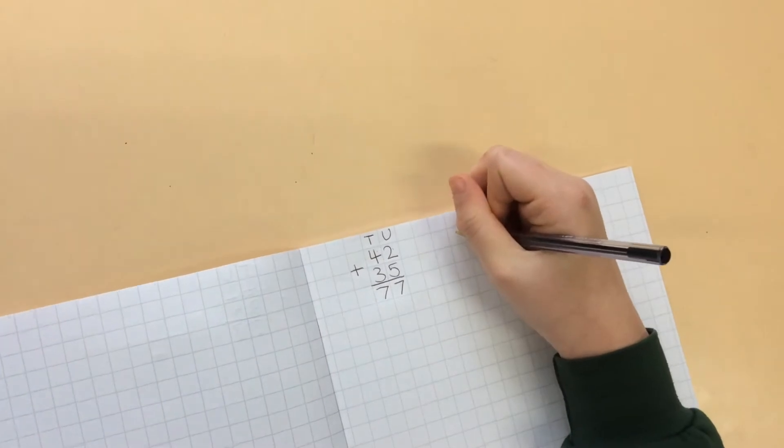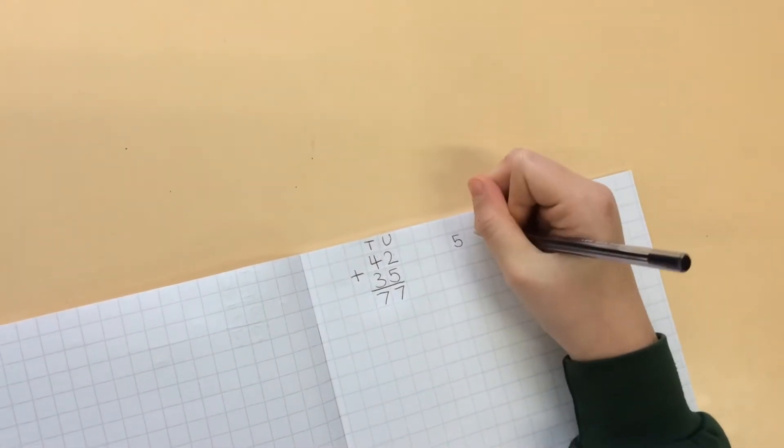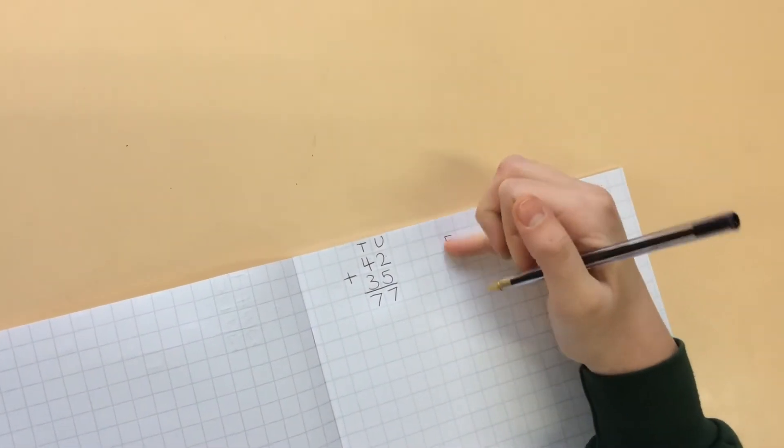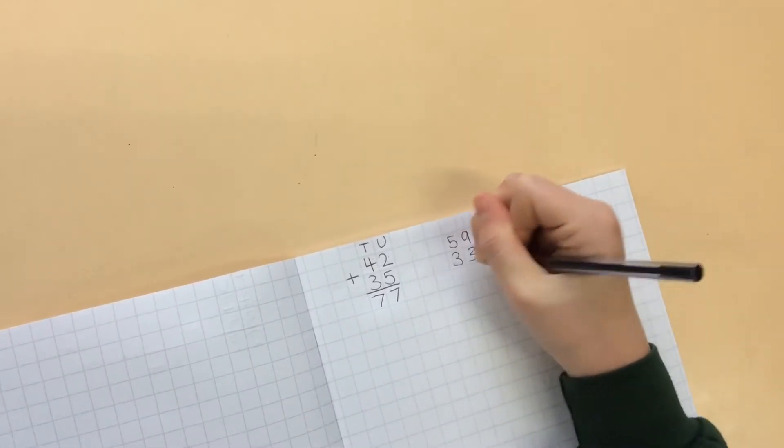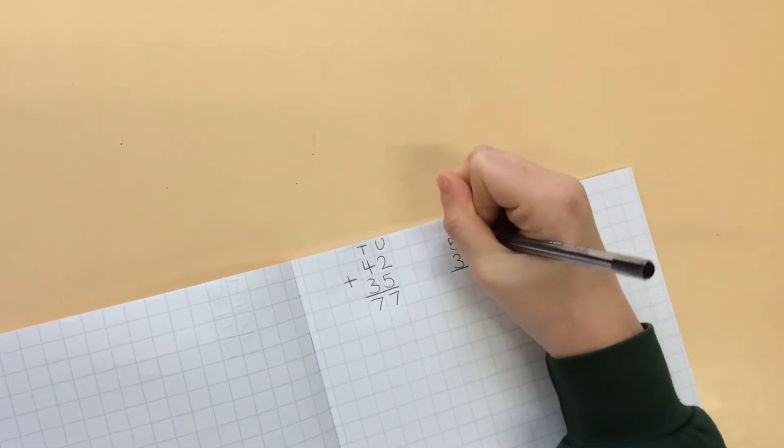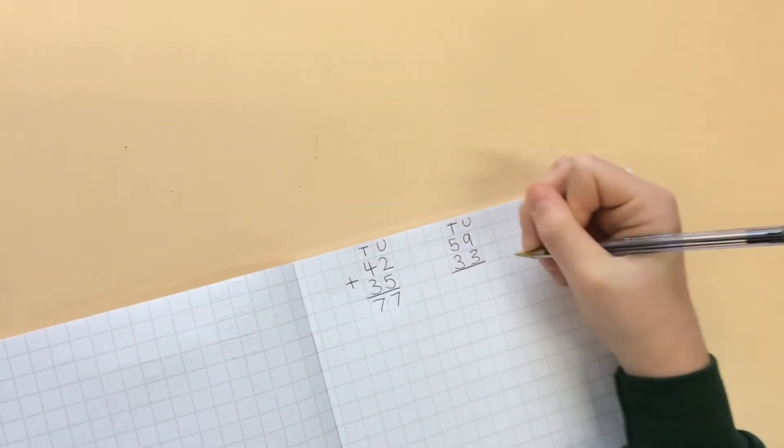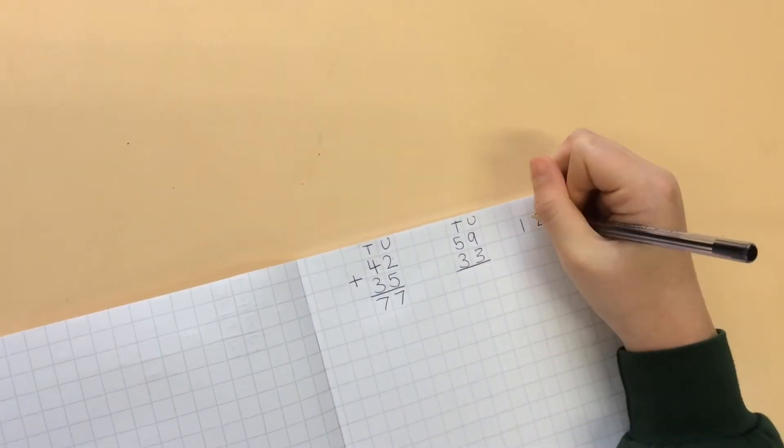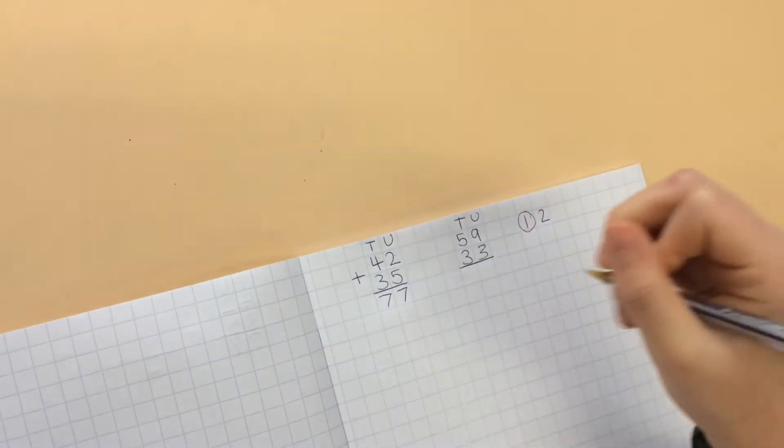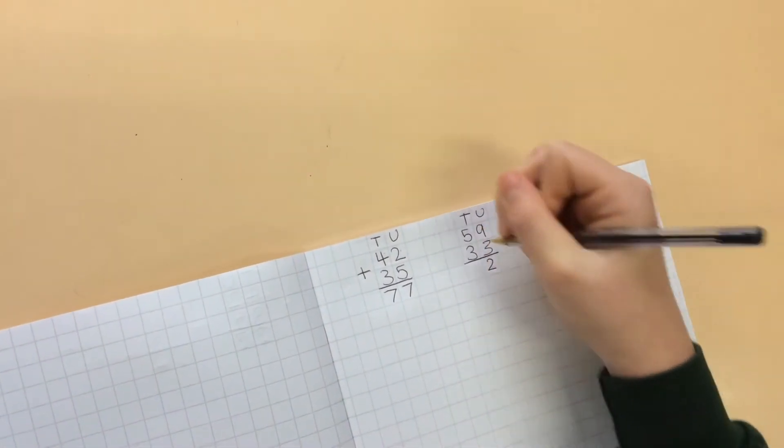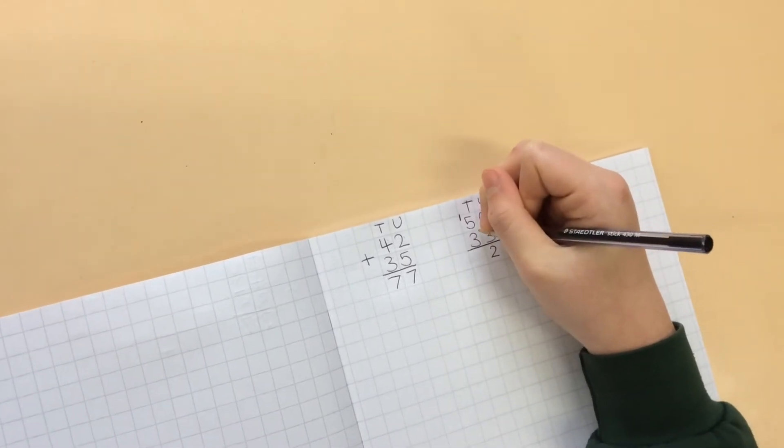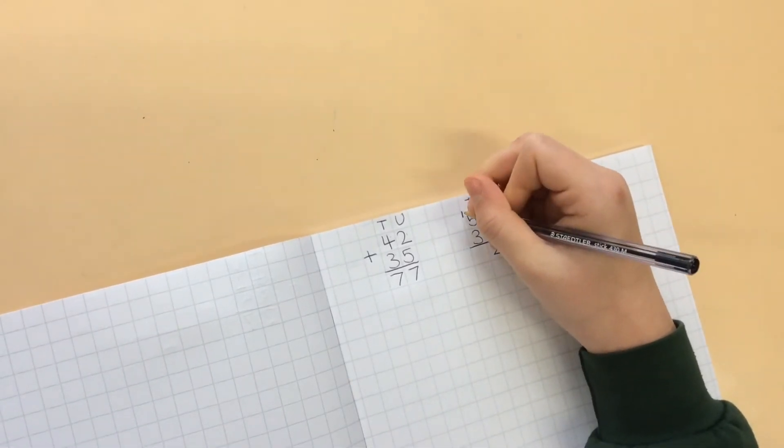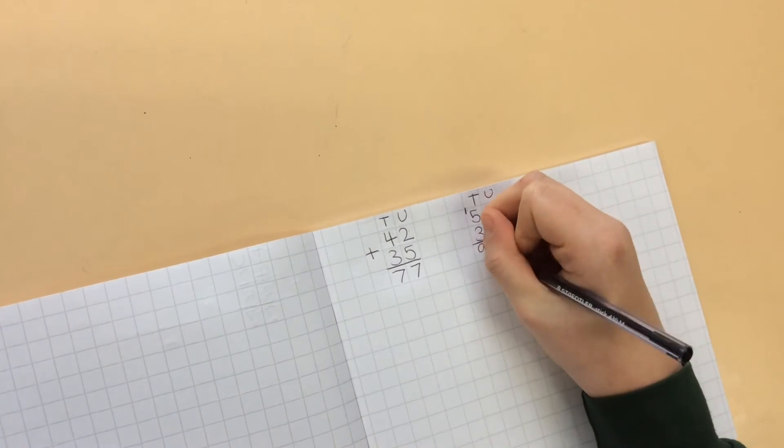But sometimes you can go over and you have to put another ten into this column. So here, nine plus three is twelve and you see you have an extra ten here, so you just put the two down there and you carry the ten up there. And then you do five tens plus three tens which is eight tens, and then you carry another ten which is nine tens.